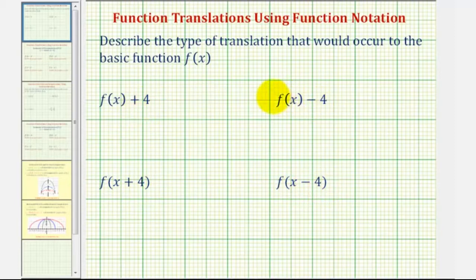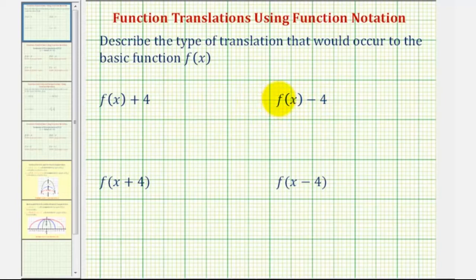Looking at these first two examples, notice how we're adding or subtracting four from f of x, which would be the function value or the y value. So because we're adding or subtracting a constant to the y value, these two will shift the graph up or down. But notice for these last two examples, we're adding or subtracting four from x, which would be along the horizontal axis, and therefore these two will shift the graph left or right.